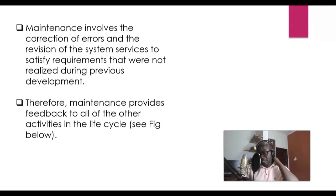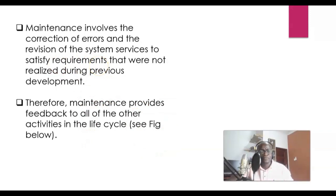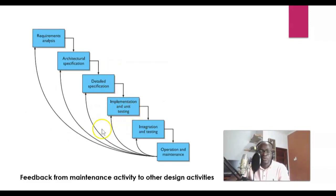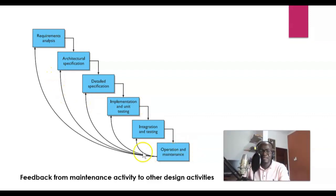Maintenance involves correction of errors, debugging, and simple revisions. Importantly, maintenance provides feedback to all of the other activities in the lifecycle — it gives you an opportunity to revisit what was done at earlier stages, such as going back to requirements analysis or architectural specification. In this illustration, operation and maintenance acts as feedback that can lead you back to any prior stage of the SDLC.